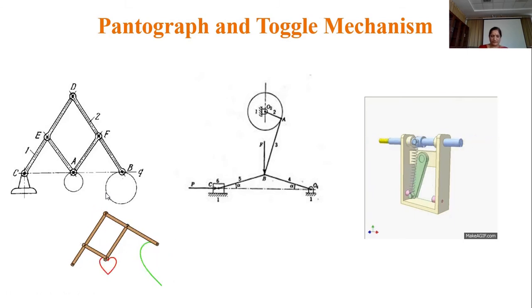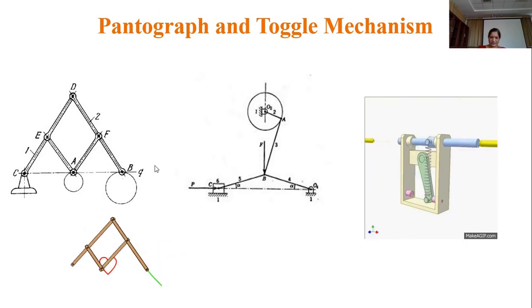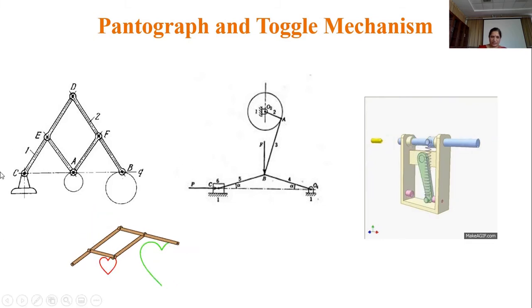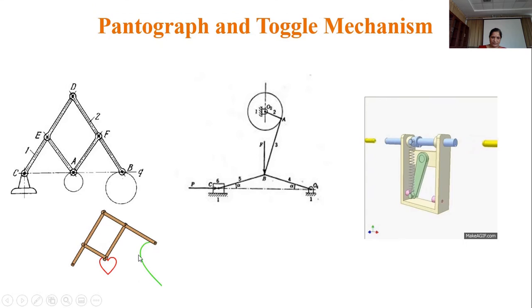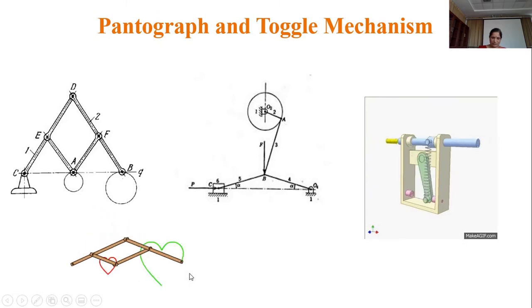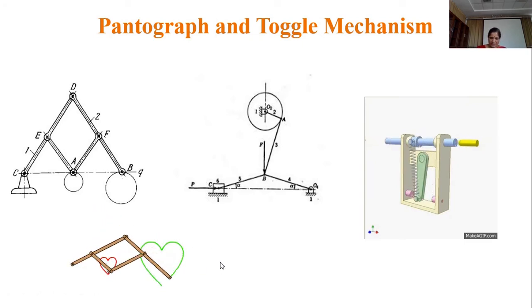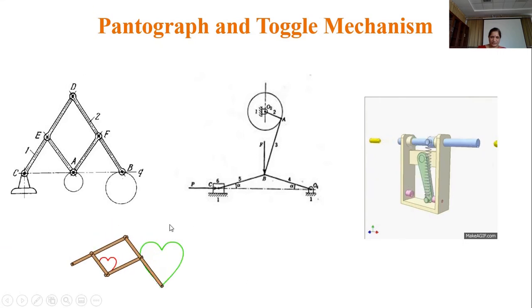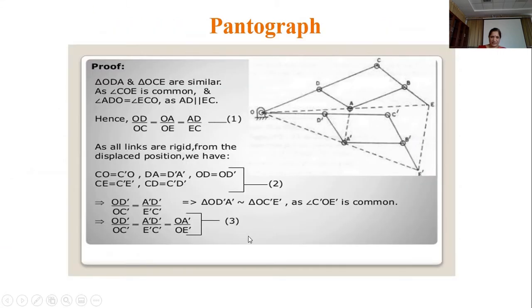The pantograph is used to reduce or enlarge drawings or maps. It is also used for guiding cutting tools or cutting torches to duplicate complicated shapes. If the shape of a component is complicated, we use the pantograph to duplicate it. It is also used in engraving or profiling machines.